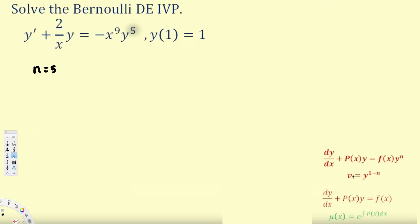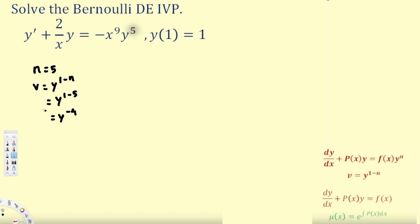If we apply this equation, v is equal to y power 1 minus n. Therefore, v is going to be equal to y power 1 minus 5, and that's going to be equal to y power negative 4. So y power negative 4 is equal to v.